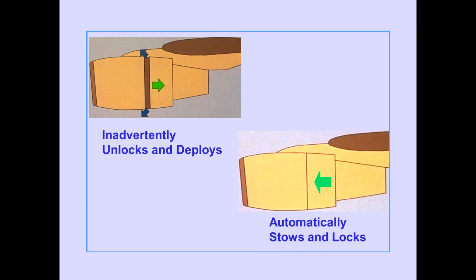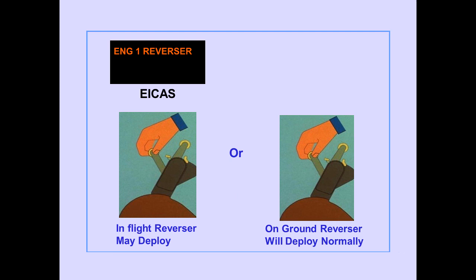If a reverser inadvertently unlocks and deploys, the thrust reverser system automatically applies bleed air to the reverser to stow and lock it. The ICAS advisory message 'engine reverser' is displayed when a fault is detected in the reverser system. If displayed in flight, the reverser may deploy if the reverse thrust lever is raised. If displayed on the ground, the reverser will deploy normally.